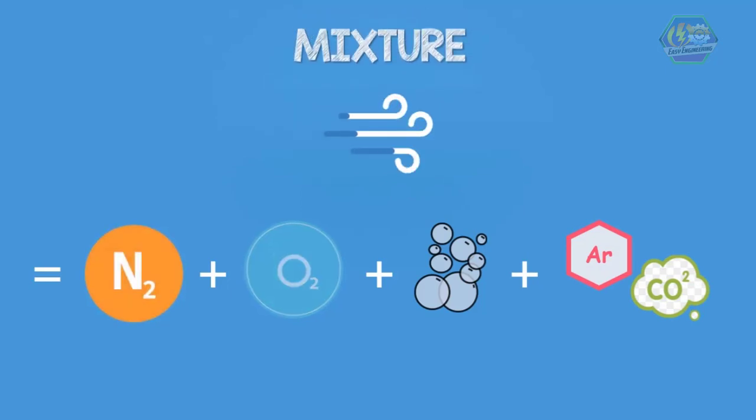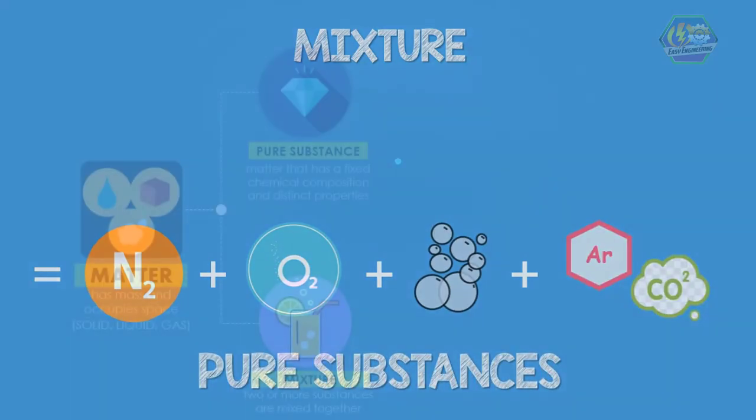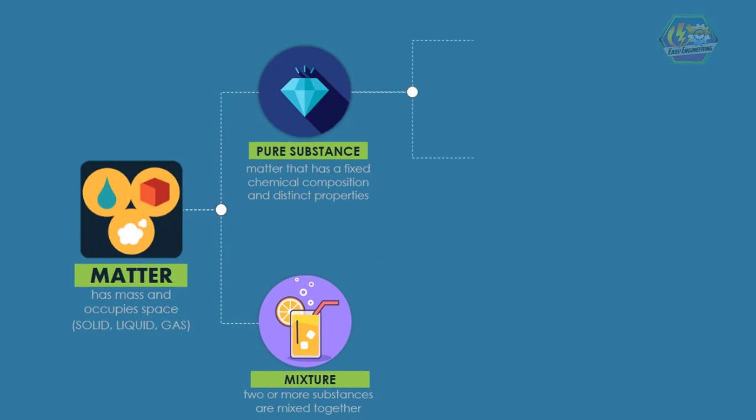Also, pure substance can be divided into two categories. A substance that cannot be broken down into chemically simpler components are called element, like for example the aluminum which is used in soda cans and the gold which is used in jewelries.